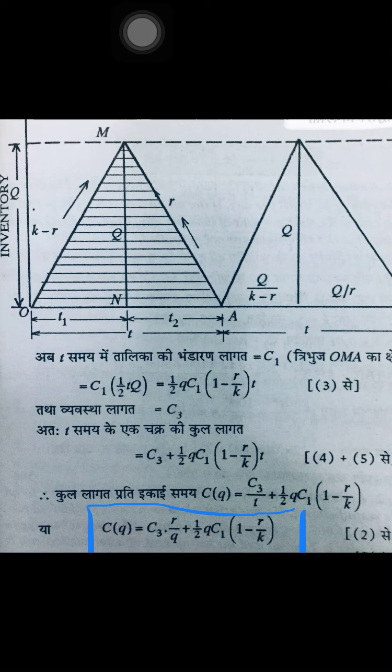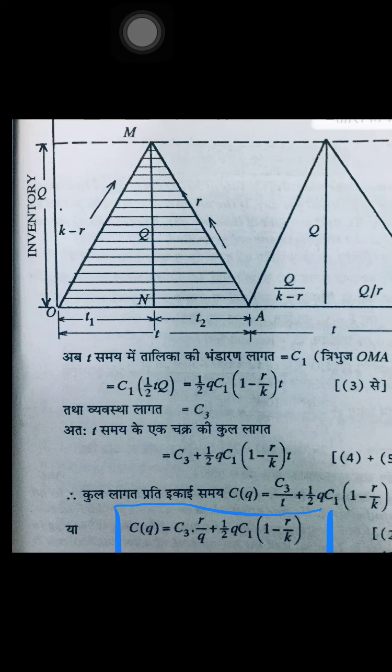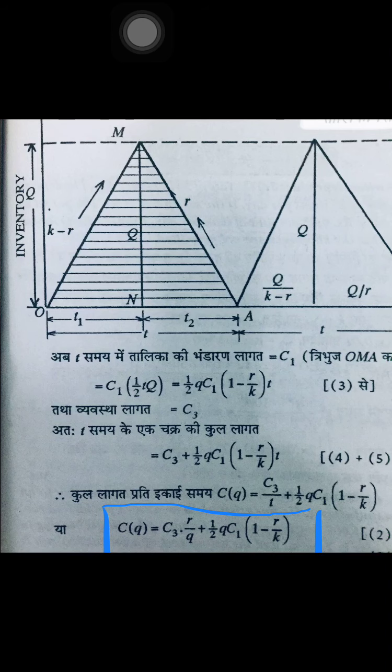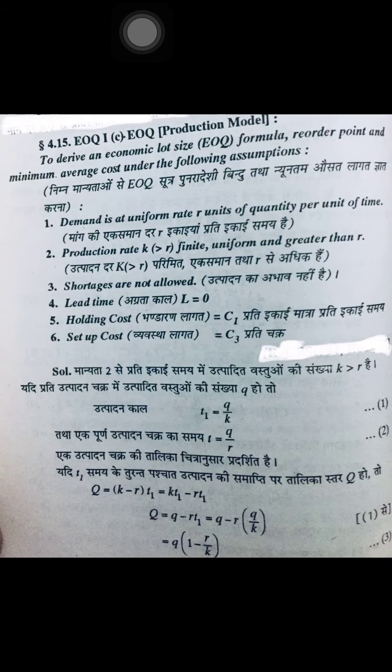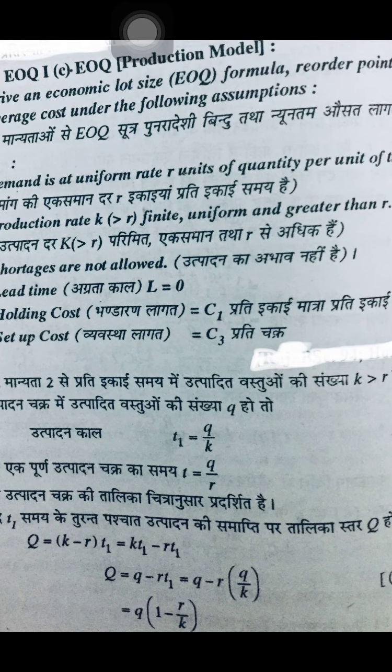T1 plus T2 together equals T, which is one full cycle. The triangle O-M-A covers both: production running and selling running simultaneously, and after production is complete, only selling continues. This is the key change in this model compared to the first two — with production, selling is happening simultaneously, and after production is fully received, only selling continues. This is our new type of inventory model.